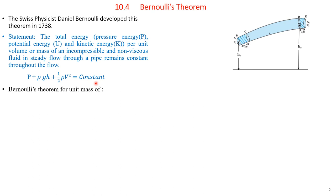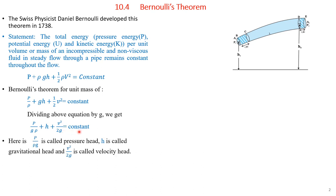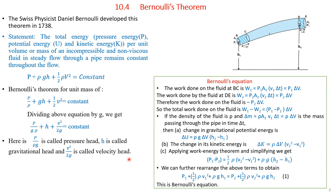We will now derive Bernoulli's equation by considering two regions of flow. The flow of an ideal fluid in a pipe of varying cross-section is considered. The fluid in section BC of length v₁*Δt moves to section DE of length v₂*Δt. The work done on the fluid at BC is W₁ = P₁*A₁*v₁*Δt = P₁*ΔV, and the work done by the fluid at DE is W₂ = P₂*A₂*v₂*Δt = P₂*ΔV, so the net work done is W₁ − W₂ = (P₁ − P₂)*ΔV.